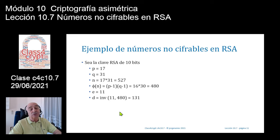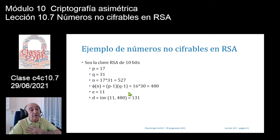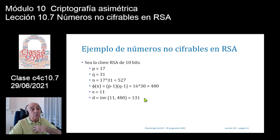Ya entonces tenemos nuestra clave. Los números públicos serían 527 y 11, el número privado sería lógicamente el 131, y también como números privados el P=17 y el Q=31.